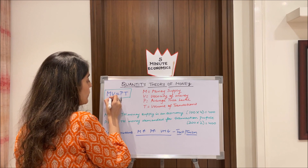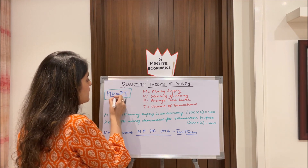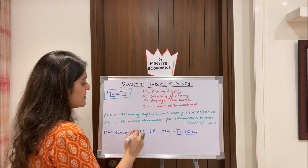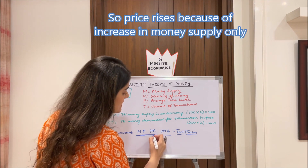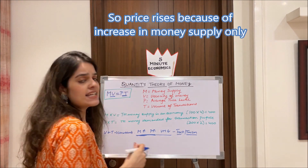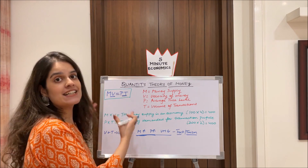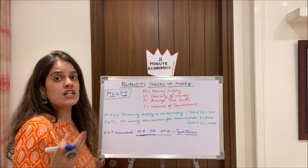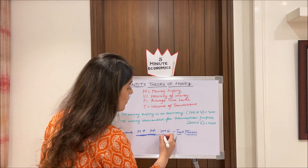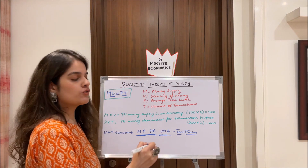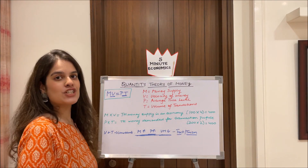Fisher said that when V and T are assumed constant, it is definitively true that when money supply increases, price tends to increase. He called this a truism — an identity, a fact. He said it is definitely true: when money supply in the economy increases, price is bound to rise, and consequently the value of money is bound to fall. This direct relationship between money supply and price is the key takeaway from Fisher's equation.